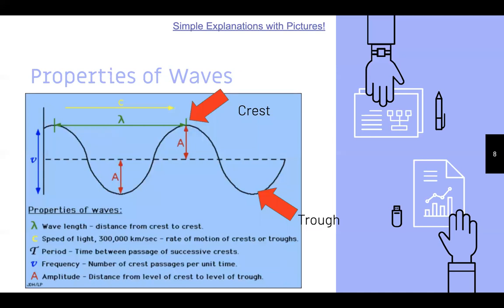Some properties of waves — there's an interactive website linked if you want to further your learning. The wave graph looks like a cosine graph with up and down motion. Analyzing it from the top: the top is called the crest — that's the name for the apex, the highest point of a wave.